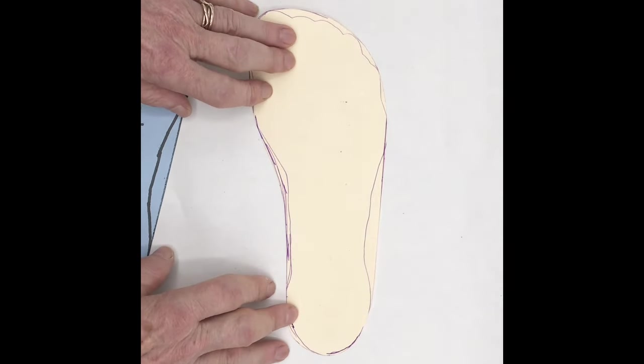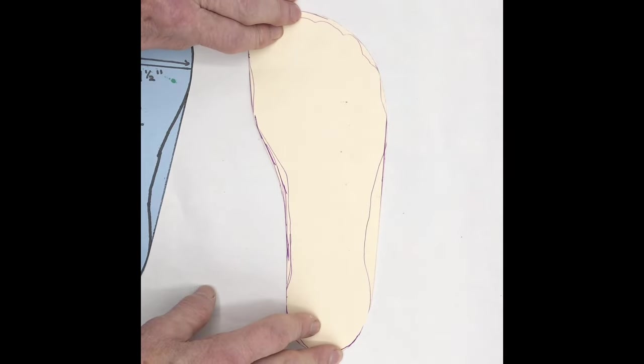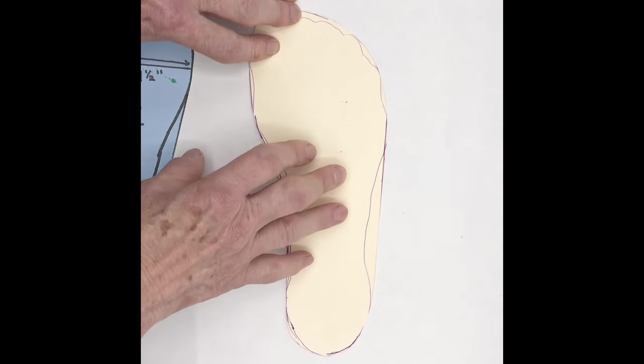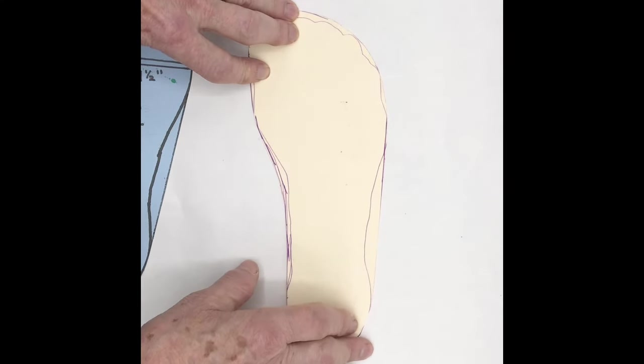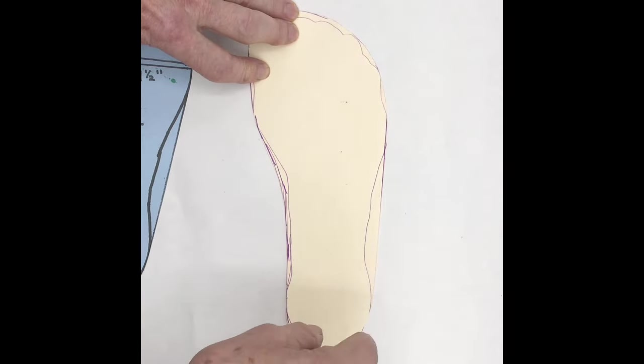To make this shoe, I start with having someone draw around my foot. A file folder is a good material to use. Stand on the file folder or a piece of paper and have someone draw around your foot with a pencil straight up and down.